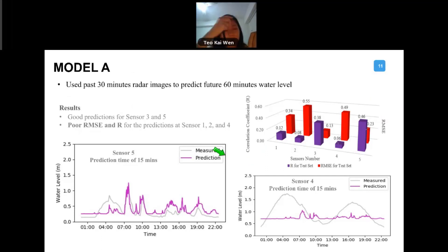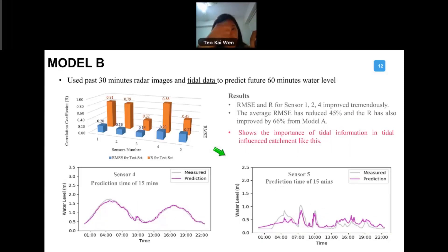Very quickly, we constructed many models but I just want to show you two of them. The first model is we use past radar images fitted into the deep learning model that we trained to predict the future 60 minutes water level. What we can see is that there is actually good prediction for sensor number three and five. But we found that the RMSE and the R-square that we have, the predictions for sensor one, two, and four is not that good. You can see the comparison right here: sensor five good results, but sensor four not that good.